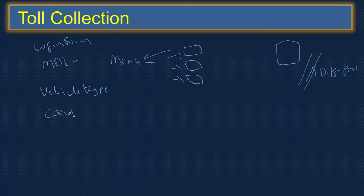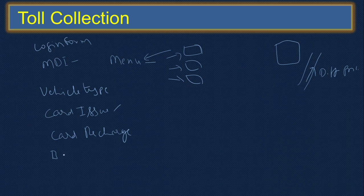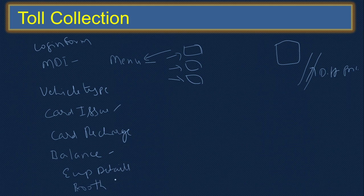You can have a card issue form to issue cards to customers. Then you can have a card recharge form so we can recharge the card. After recharge, we need to check the balance available. Then you can enter employee details for the workers. You can also enter booth details — what booths you have.